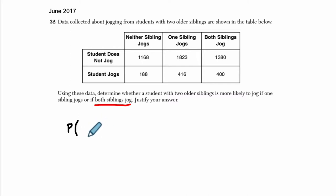So we're looking at the probability that they jog given that one of the siblings jog, versus the probability that they jog given that two of the siblings jog. Before I start to analyze all of this, what I'd like to do is figure out what are my marginal probabilities.